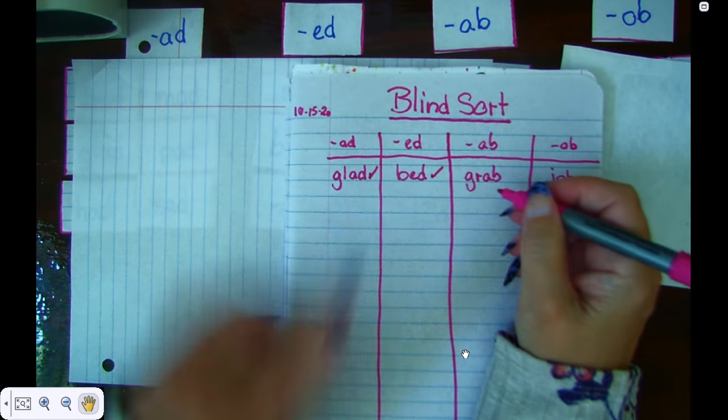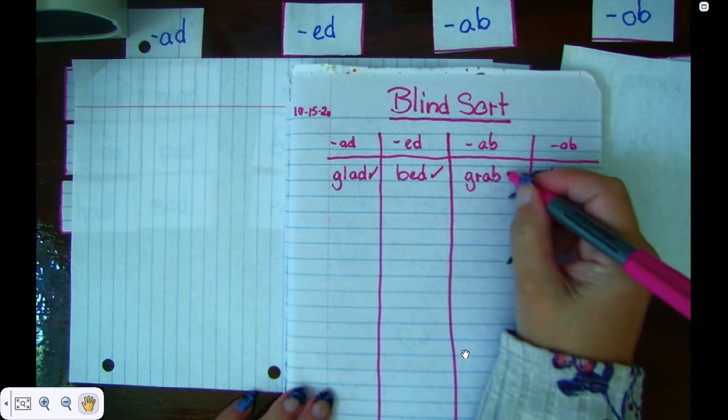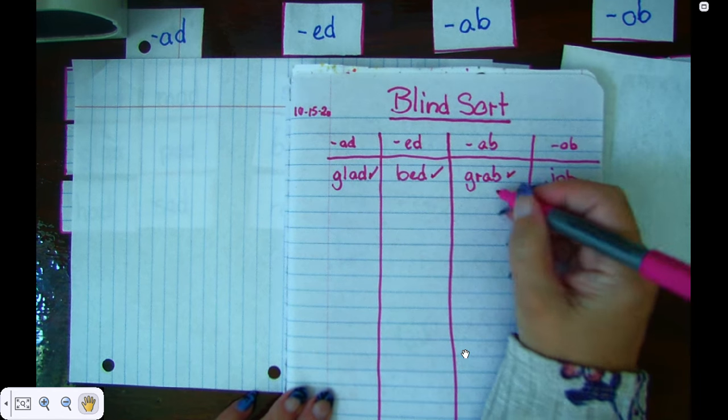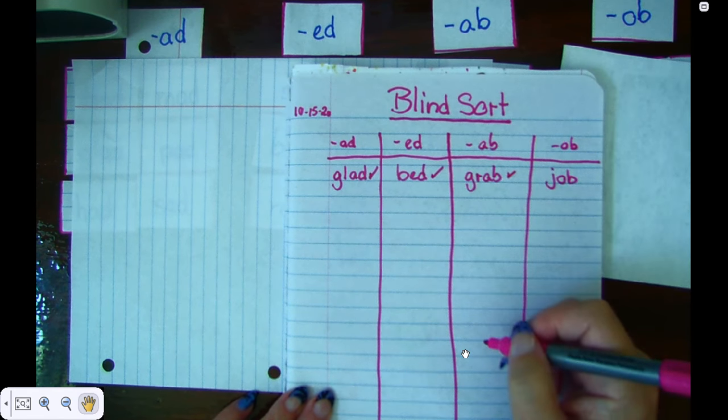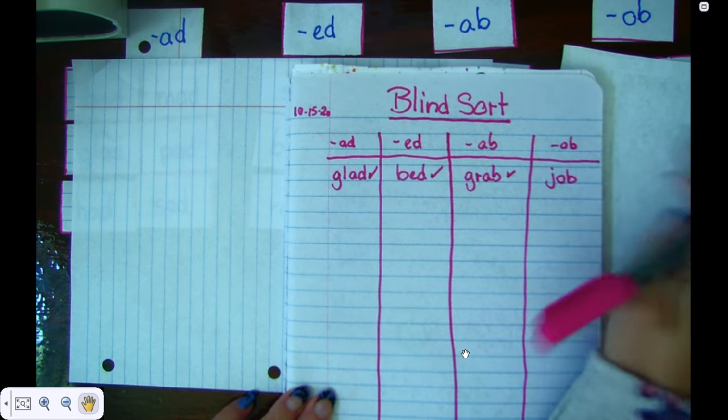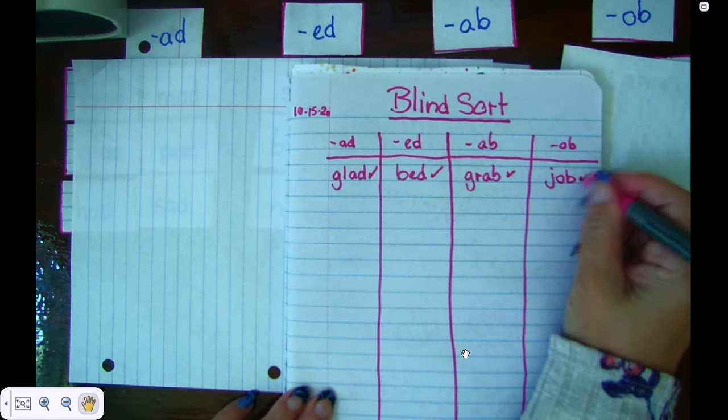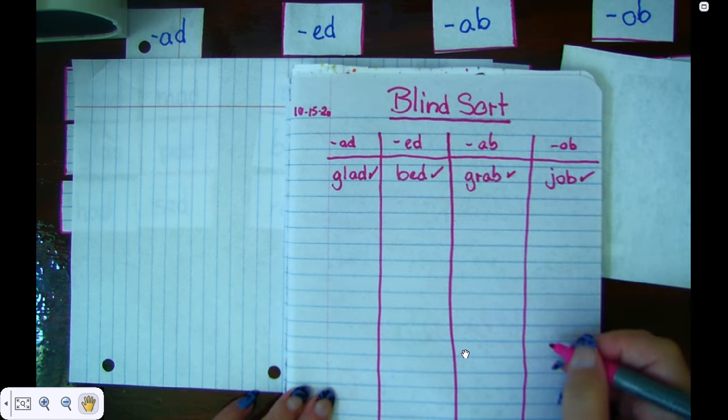Grab. When I look at my ab column, I know grab is one of my words. I will see it. And then I have to write the rest of the words. Job. I can see it over here somewhere and then I'll check it off and write down the words that I missed.